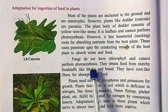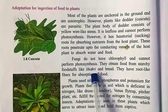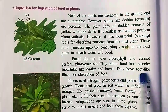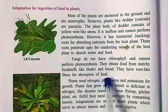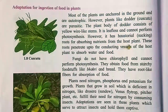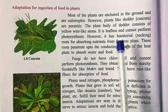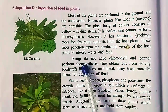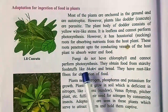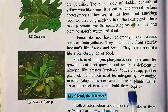Fungi do not have chlorophyll and cannot perform photosynthesis. They obtain food from starchy food stuffs like bhakri and bread. They have root-like fibers for absorption of food. Fungi are not autotrophic because they can't produce their own food — they live on food stuffs like bhakri and bread.